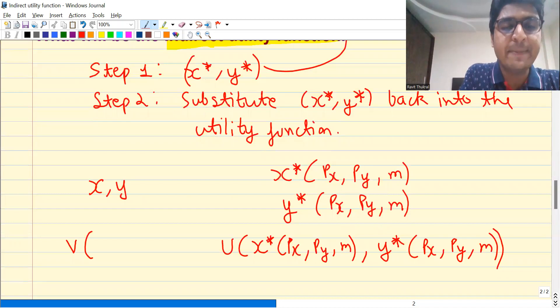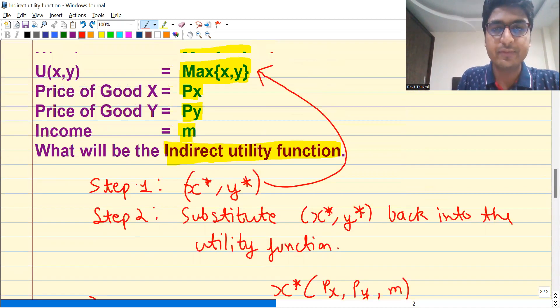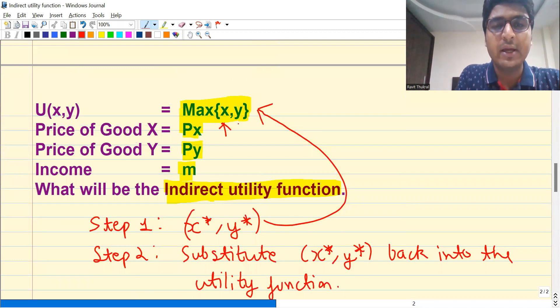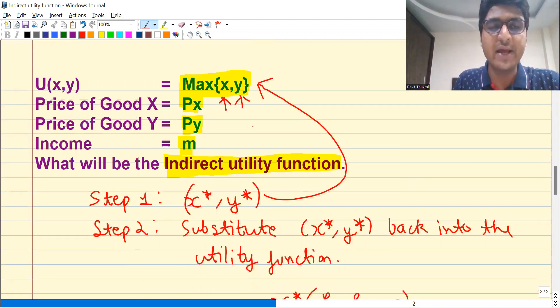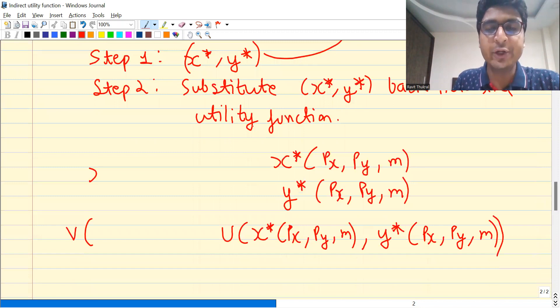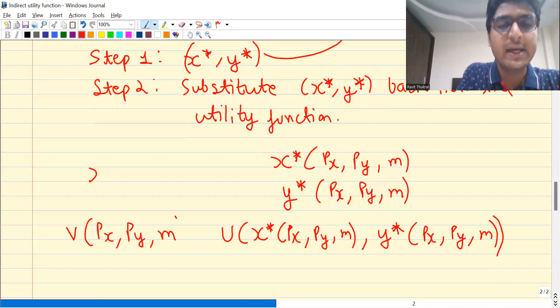It is a function of prices. Initially utility function depending upon X and Y, in case of indirect utility function it will depend upon Px, Py and m. So indirect utility function is a function of prices and income. That's how you find out indirect utility function.